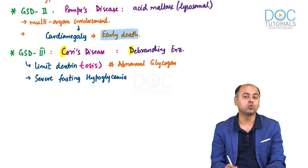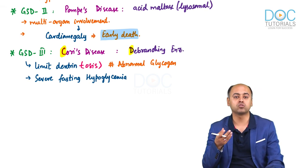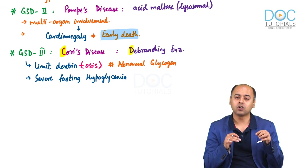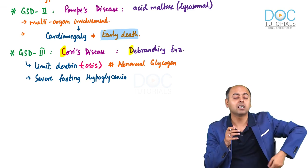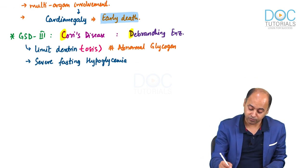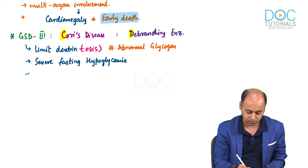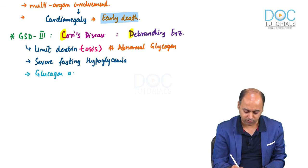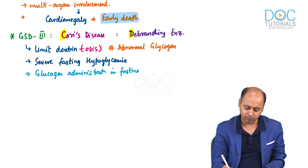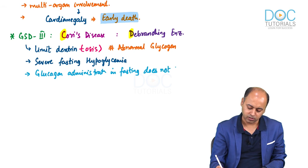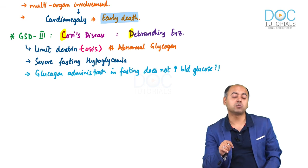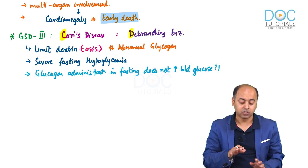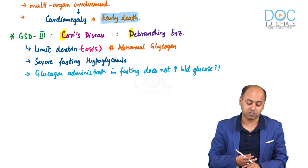Normally when hypoglycemia is present, you give glucagon, which will try to mobilize more glucose from whatever glycogen remains. But here, glucagon cannot have any effect. Why? Because the problem is at the branch site — the debranching enzyme is not affected by glucagon. Glucagon acts on glycogen phosphorylase. So another important finding here is that glucagon administration in the fasting state does not increase blood glucose level. However, if glucagon is given during the fed state, blood glucose will rise, showing that glycogen phosphorylase is working normally.